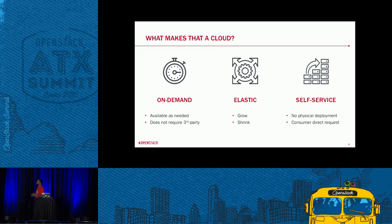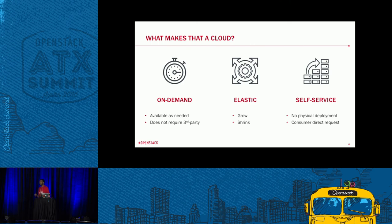Moving towards talking about OpenStack, you have to have an idea of what makes something a cloud. Essentially there are three things people attribute to being a cloud. The first is that it's on demand — it's available as needed. It doesn't require a third party. You don't have to make those calls to folks outside of your organization or even other departments; you can essentially get your resources and go get them on demand.